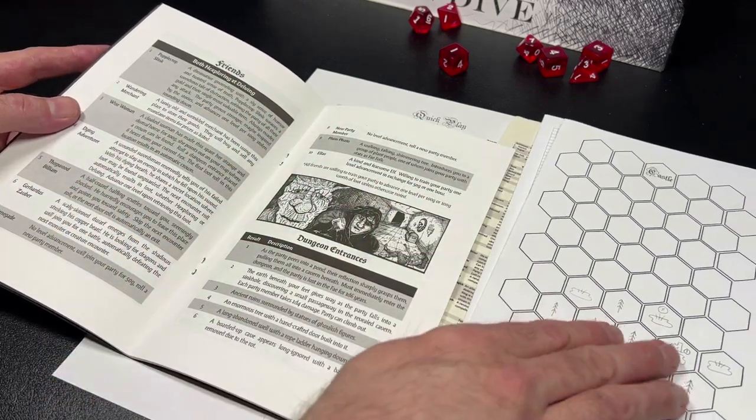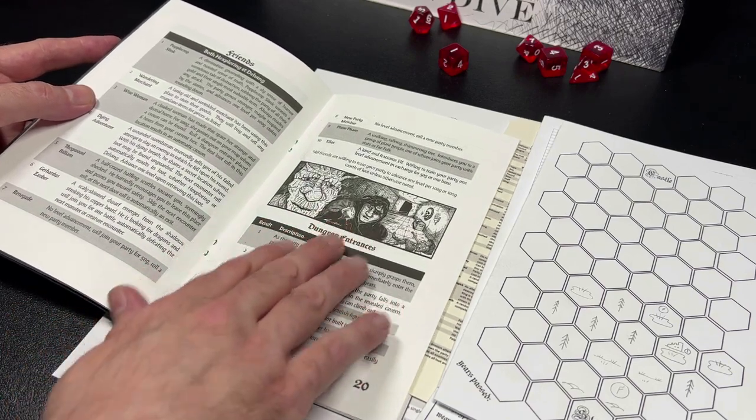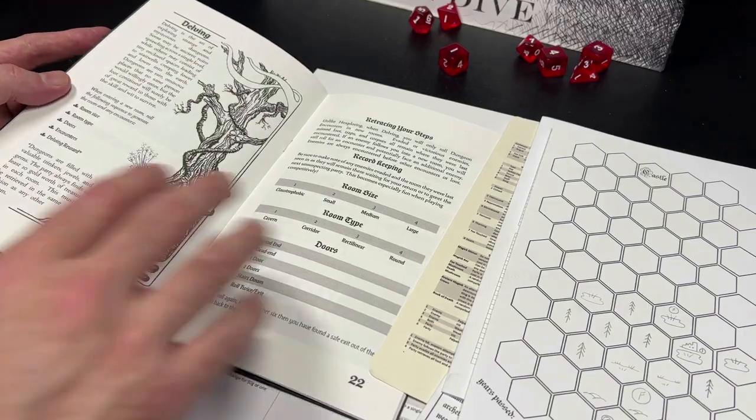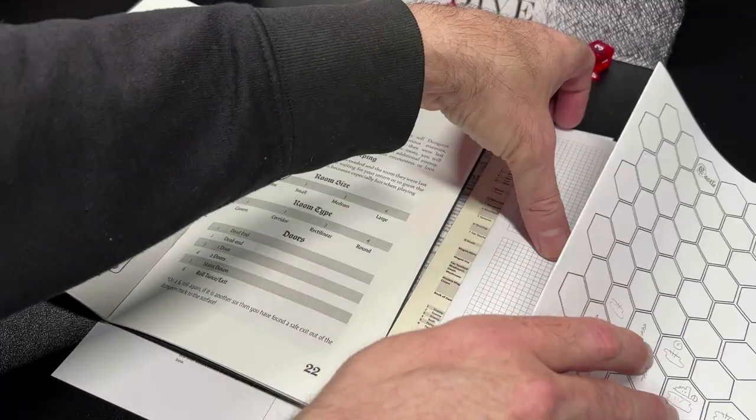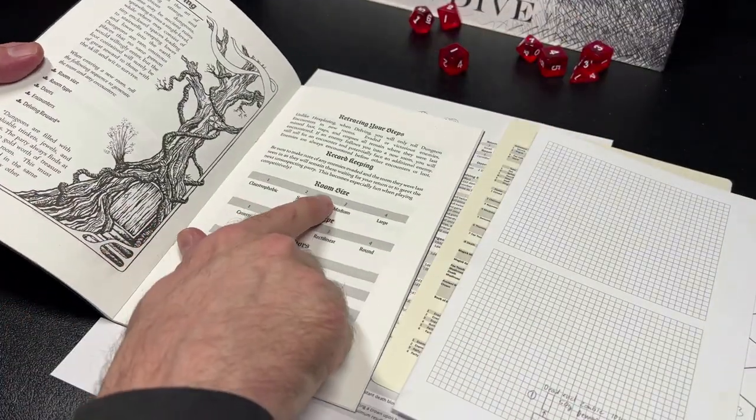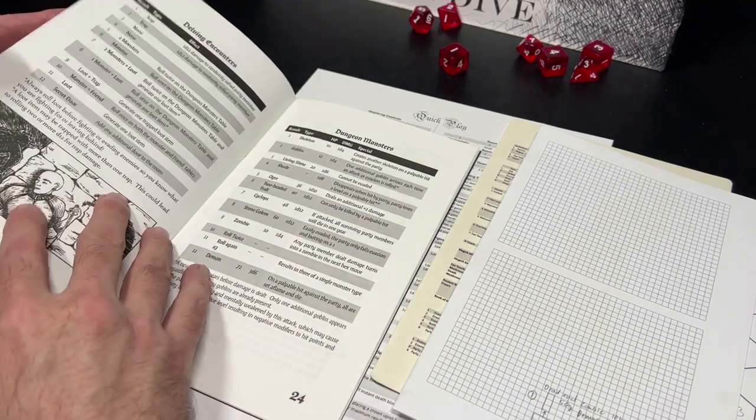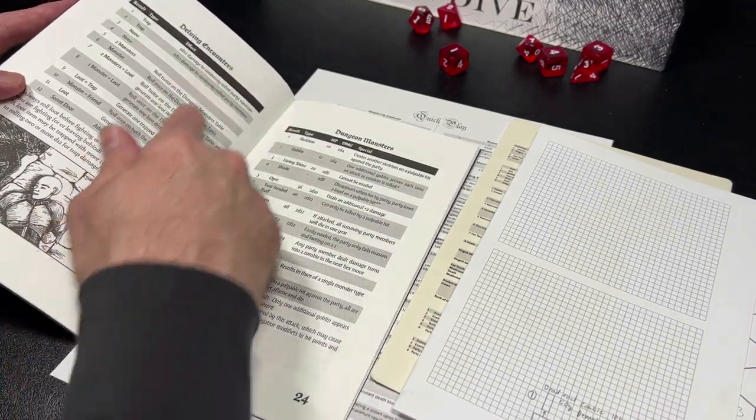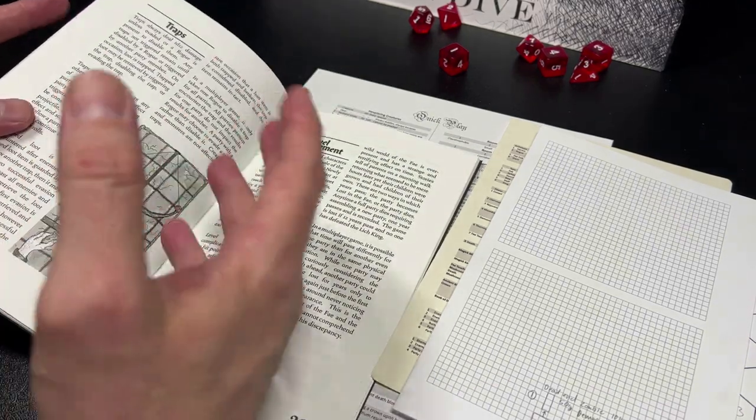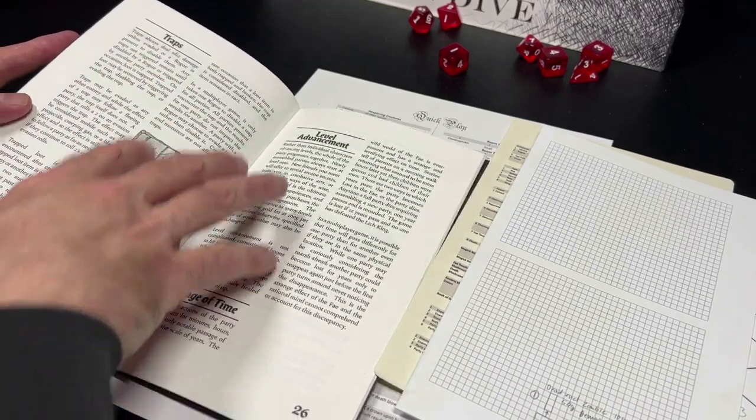Once you discover a dungeon, you can go into that dungeon and you will roll on the various kinds of dungeon entrances. Once you enter the dungeon, you are in the delving part of the game, at which point you will take your graph paper and then you will roll up your various room sizes, the room type, how many doors that room has, what kind of encounters you have in the room, what kind of monsters you might meet, and what kind of loot you might be able to discover.